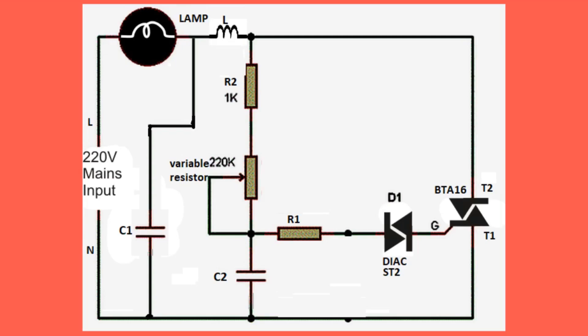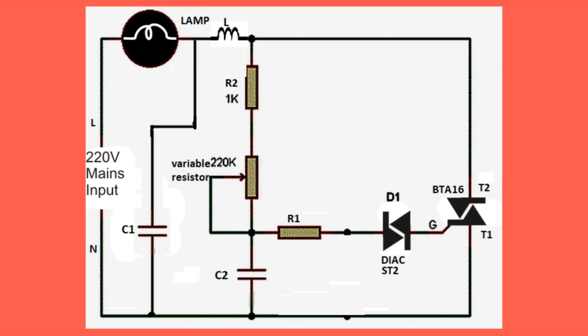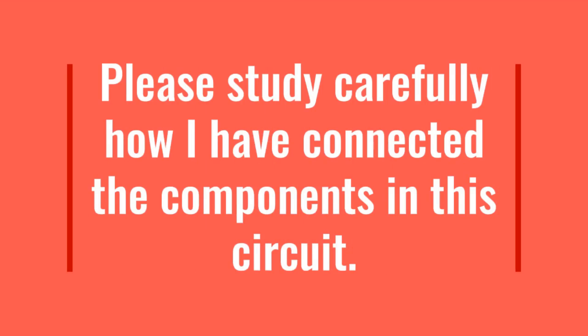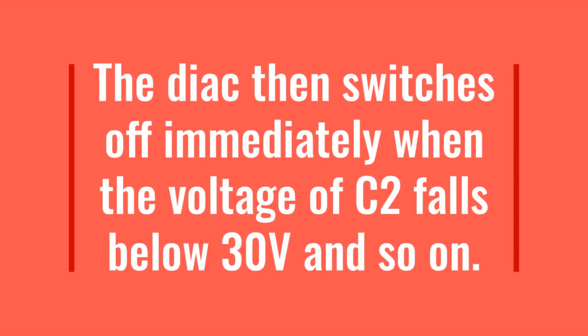Connect main terminal 1 to the neutral line of the 240-volt AC power supply, then connect main terminal 2 of the TRIAC to the load, and connect the load to the live line of the 240-volt AC supply. Connect the gate terminal to a DIAC as shown, then connect the other terminal of the DIAC to resistor 1, then to a variable resistor, join the variable resistor to resistor 2, and connect to main terminal 2. Connect capacitor 2 between main terminal 1 and the variable resistor, and lastly connect an inductor, the switch, and capacitor 1 as shown in the diagram. The DIAC is used as a trigger device that fires when the voltage of capacitor 2 rises to roughly 35 volts in either polarity, partially discharging capacitor 2 into the TRIAC gate and triggering the TRIAC on. The DIAC then switches off immediately when the voltage of capacitor 2 falls below 30 volts, and so on.